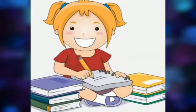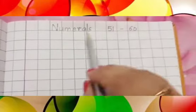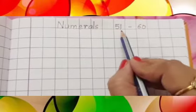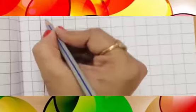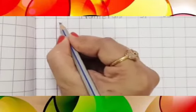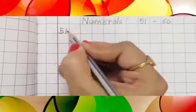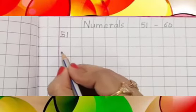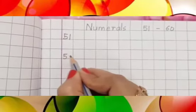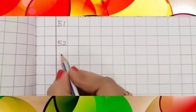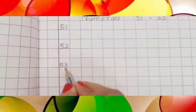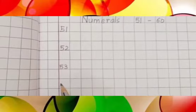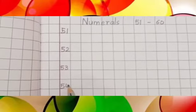Now ma'am will show you how to write numerals in your notebook. First we will give the heading: numerals 51 to 60. We will start from the second line. We will write 51, then leave one box, and we will write 52. Then again leave one box and we will write 53. Again leave one box and then write 54.